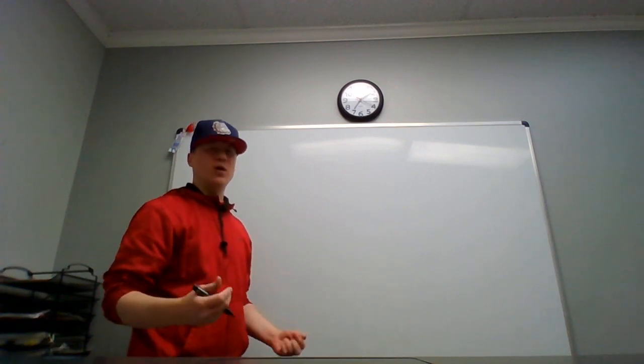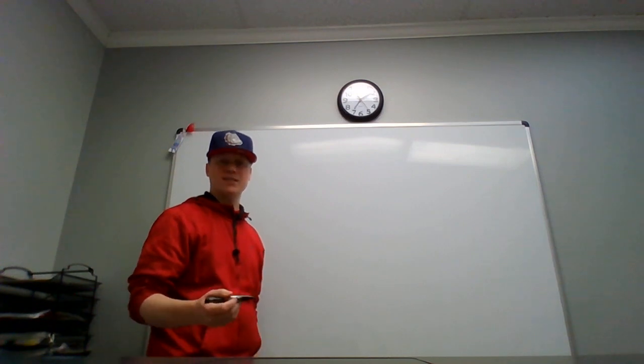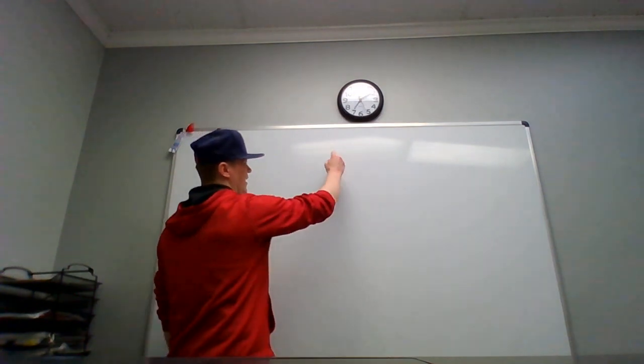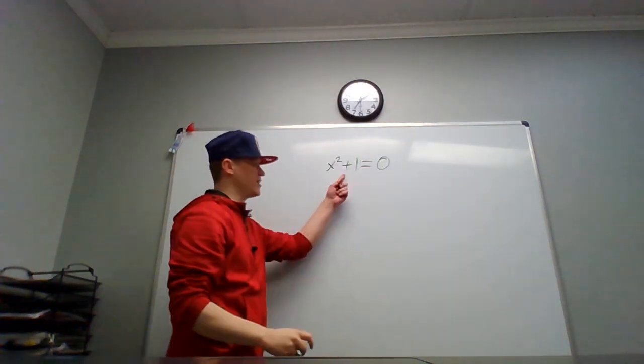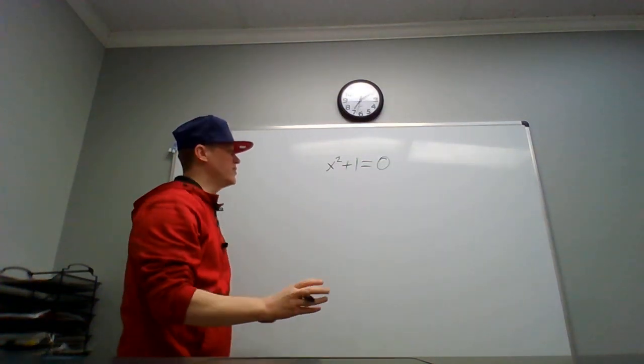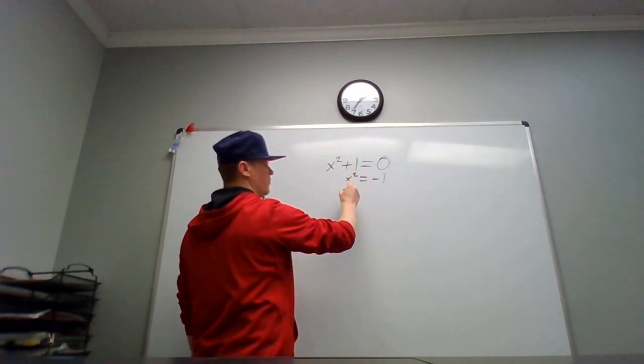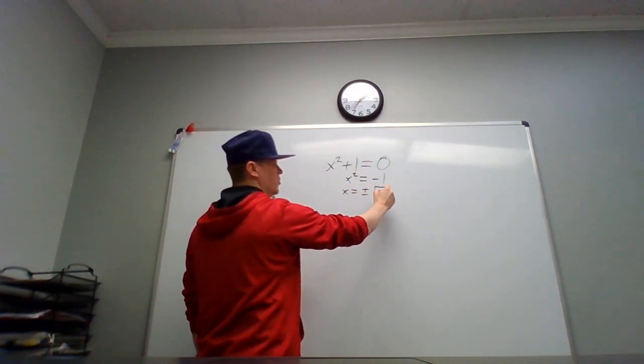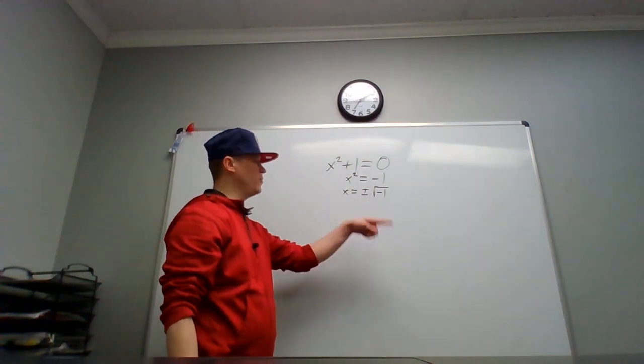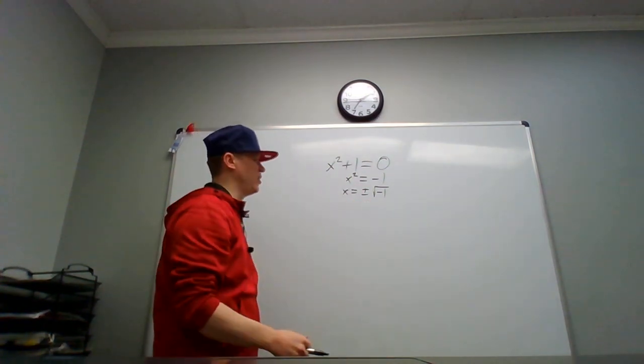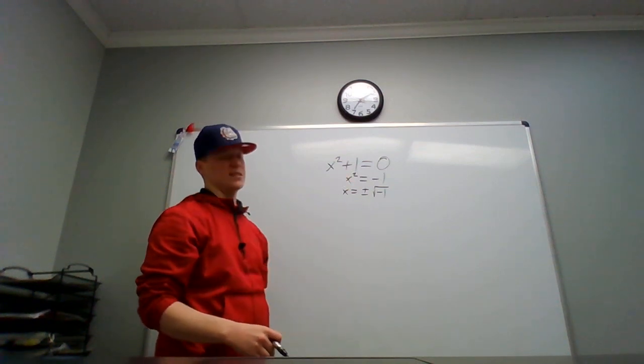So then, where did imaginary numbers come from? What are their use? A long time ago in a place called Math World, mathematicians wanted solutions to this equation: x² = -1. And so several of them began exploring, saying if x² equals negative one, then x will equal plus or minus the square root of negative one. And they started working with these things. They weren't yet called imaginary numbers. They just were solutions to equations like this one.